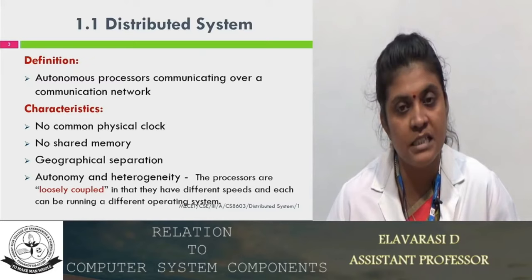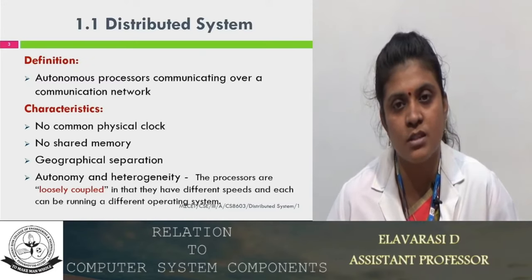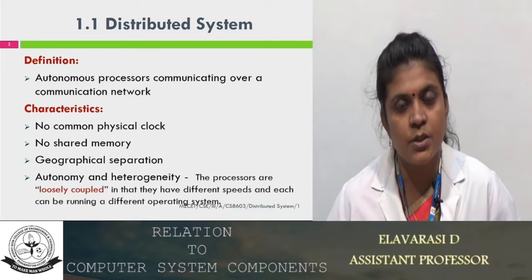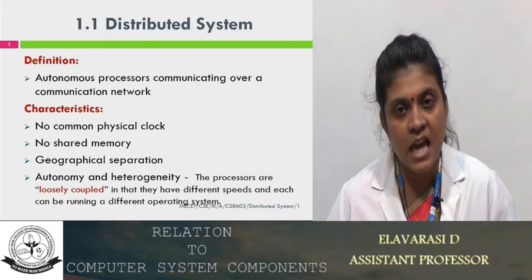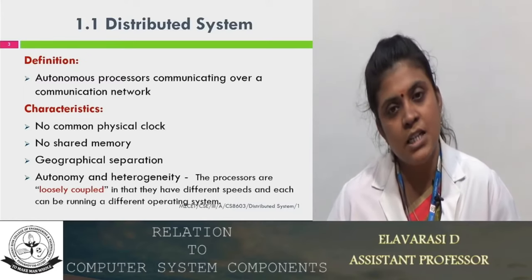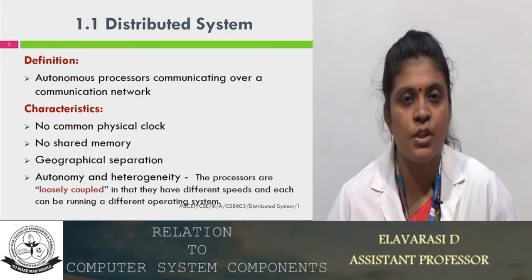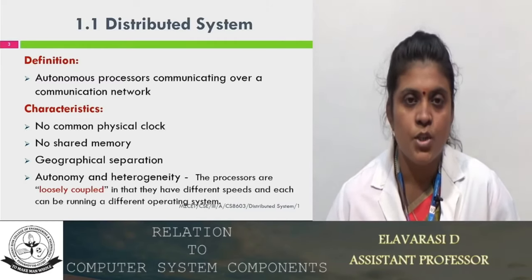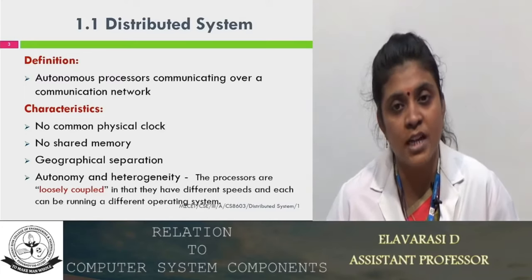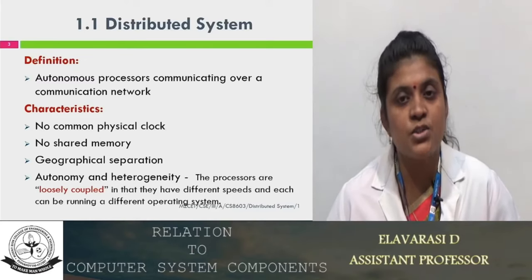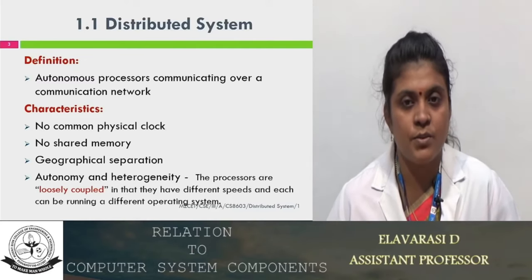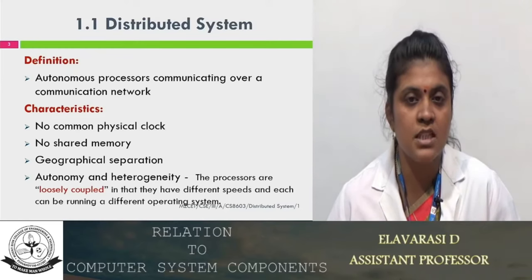In the shared memory concept, every processor connected over the communication network shares its memory, and each processor has its own cache memory. But here there is no shared memory concept. Each processor has its own individual memory. Through this characteristic, we can identify that communication is not through shared memory — communication is through message passing primitives, MPI (Message Passing Interface).